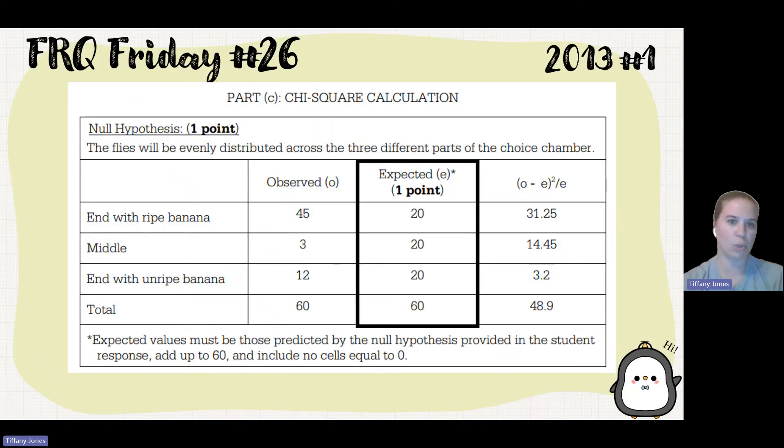So here is what was on the actual scoring guidelines. The flies will be evenly distributed across the three different parts of the choice chamber. You see our expected being 20, 20, 20, and then you can see that calculation.